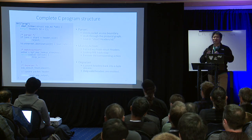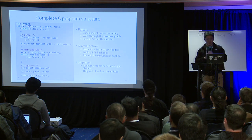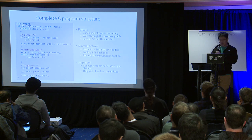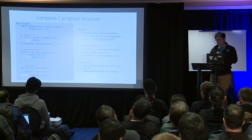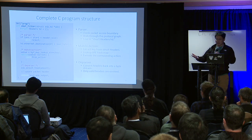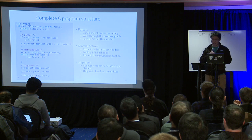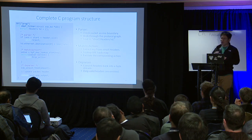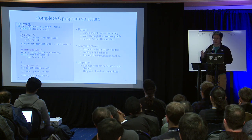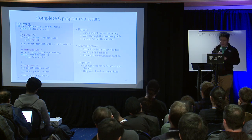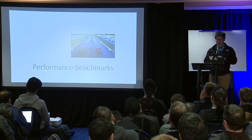After users write these three stages in P4 code, we generate a single eBPF program with three parts: parser, match and action, and de-parser. The parser checks packet access boundaries, walks through the protocol graph, and puts the headers into the struct. Then we generate the map lookup mechanism using the eBPF helper function bpf_map_lookup_elem. In the de-parser stage, we write the values back.